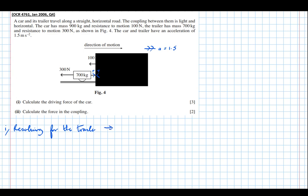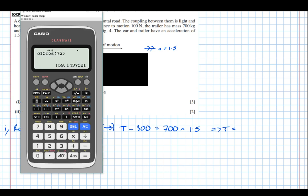The positive direction should be the direction of motion. All the forces forward, which is T, minus all the forces going backwards, which is 300, equals mass times acceleration. So it equals 700 times 1.5. Which means T equals 700 times 1.5 plus 300, which equals 1,350 newtons.